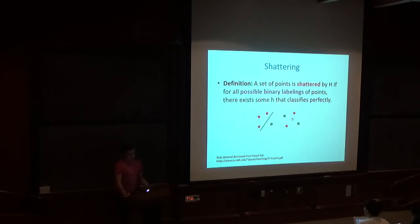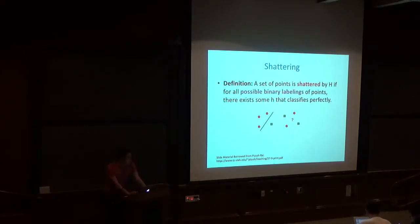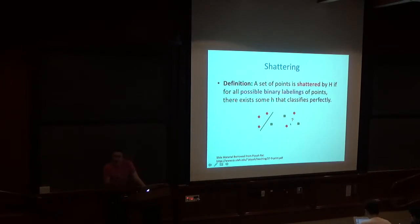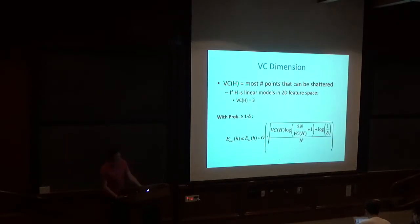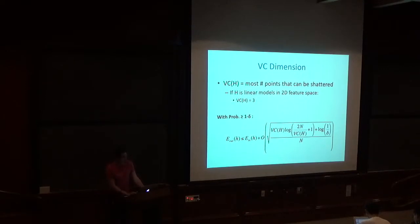This is not true for four points — a set of four data points in 2D cannot be shattered by linear models. A simple example is the XOR problem. There does not exist a linear model that can shatter this labeling. So in 2D, linear models cannot shatter four points. The VC dimension of a hypothesis class is the most number of points that can be shattered by that hypothesis class. If H is the class of linear models in a 2D feature space, the VC dimension of H is three.